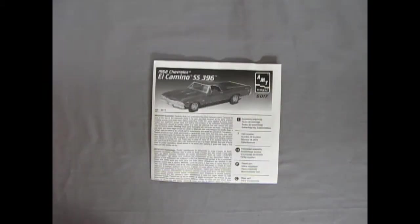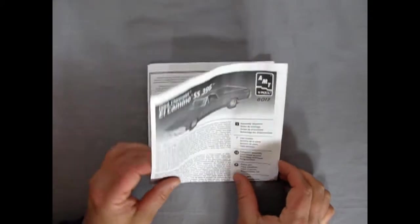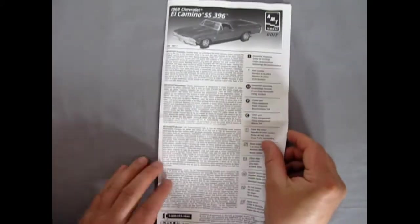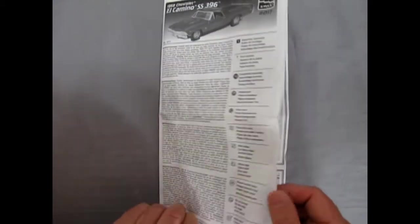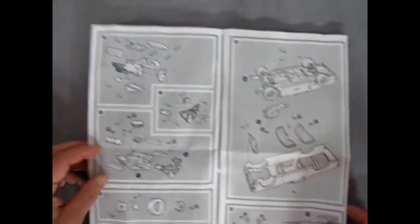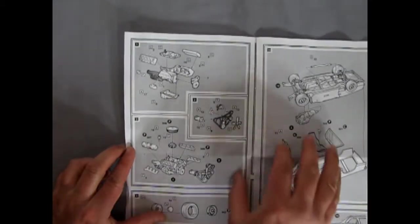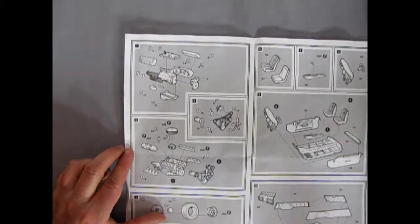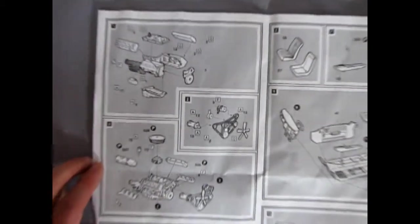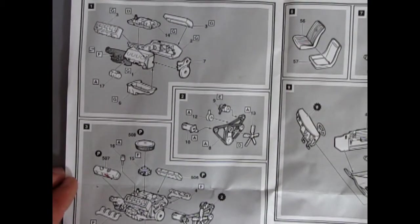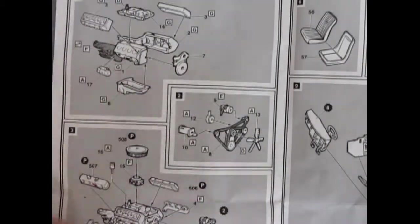Here's our instructions for the 1968 Chevy El Camino SS 396. And they are a little short, so of course they fold out into a full page here. Now yes, somebody has built this or started this model before. It wasn't me. I do believe I picked it up second hand, but most of the things should be in here. So let's just zip up into these pictures. There we go.